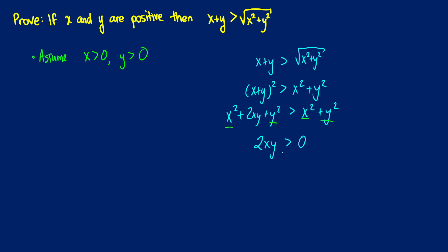So if x plus y is greater than the square root of x squared plus y squared, that means that 2xy is greater than 0. So if x and y are positive, can we make this claim? Can we claim that 2xy is greater than 0? Yes, we can. Because x and y are greater than 0, we know that xy is going to be greater than 0, which tells us that 2xy is greater than 0.